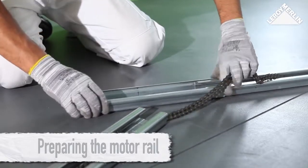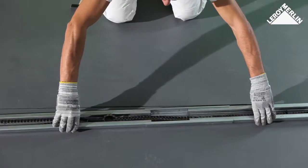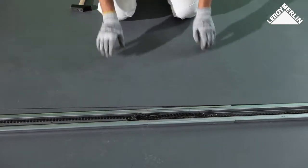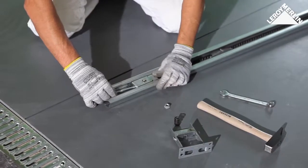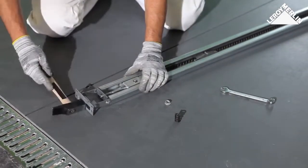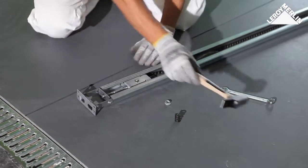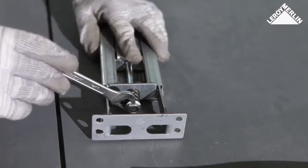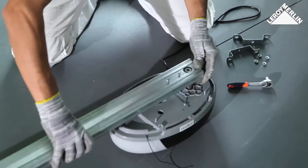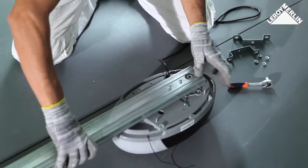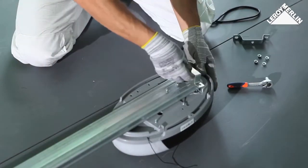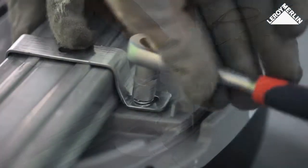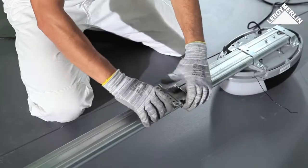Preparing the motor rail: In this particular model, the rail is made up of two parts linked by an extension piece. Assemble the rail head which comprises the sprocket and the chain tensioner. Adjust the tension of the chain with a spanner.